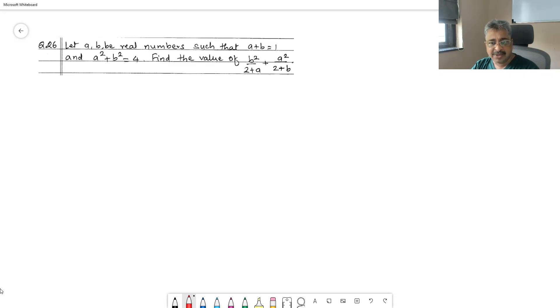Because there is a square involved in the final expression, because there is b squared involved in the final expression, we would like to substitute b squared upon 2 plus a, plus a squared upon 2 plus b.